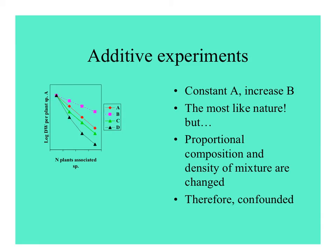The first kind of competition experiments were additive experiments, where you have a constant number of species A and then increasing amounts of another species. This is probably most like what happens in nature, but proportional composition and density of the mixture are both changed at the same time, so it's hard to tell which is more important. In a graph of species A growing by itself, when increasing amounts of other species are added, species C and D both have depressing effects on A. But species B seems to actually benefit A, because the biomass of A is greater when growing with B.